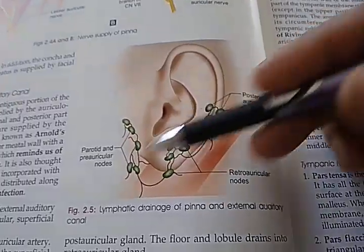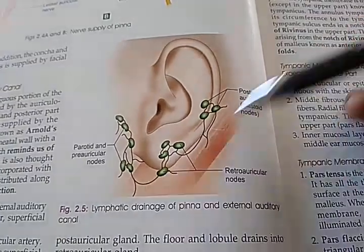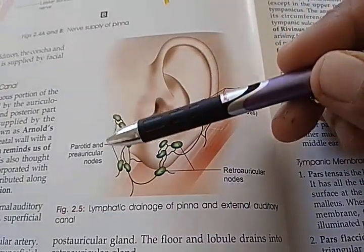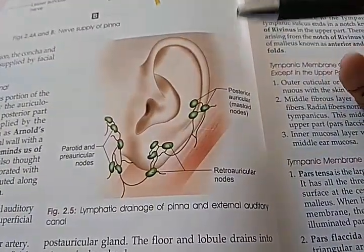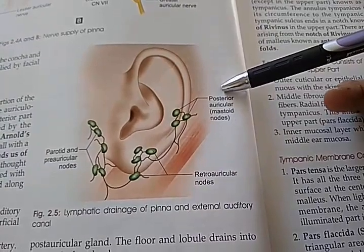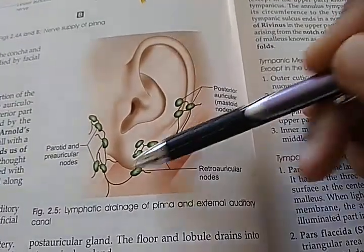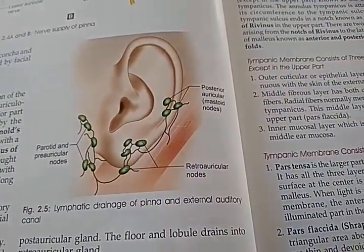Look at the lymphatic drainage of pinna and external auditory canal. You have the pre-auricular nodes, posterior auricular nodes, mastoid nodes, and here they are talking about retroauricular nodes.